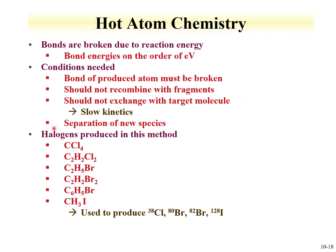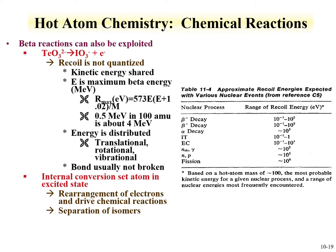There should be a reasonable route to separate the new species. Halogens have been produced with this method. Beta reactions can also be exploited in hot atom chemistry, looking at recoil. Often in recoil energy, bonds aren't broken because the energy gets distributed. However, internal conversion can set atoms into an excited state, and one can utilize this rearrangement of electrons to drive chemical reactions for separations. Beta decay, positron decay, and fission certainly have sufficient energy to achieve separations.